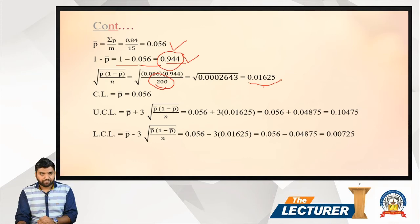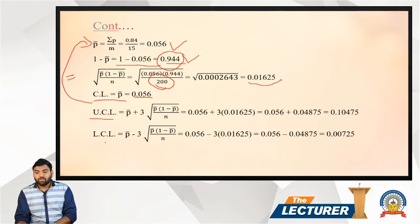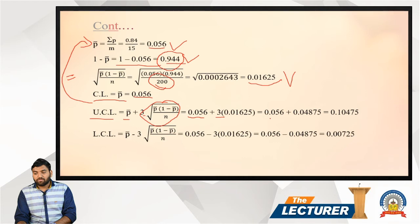Now we calculate the three control limits. The central line (CL) equals p-bar = 0.056. The upper control limit (UCL) = p-bar + 3 × sqrt(p-bar × (1 − p-bar) / n) = 0.056 + 3 × 0.01625 = 0.056 + 0.04875 = 0.10475.